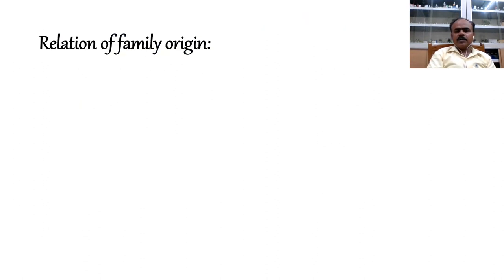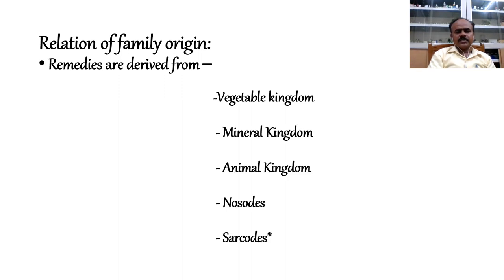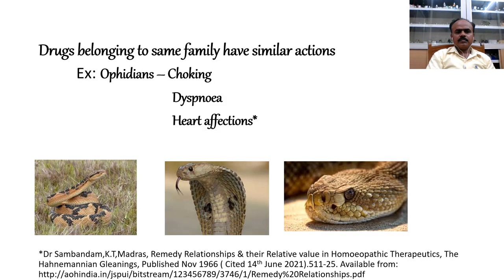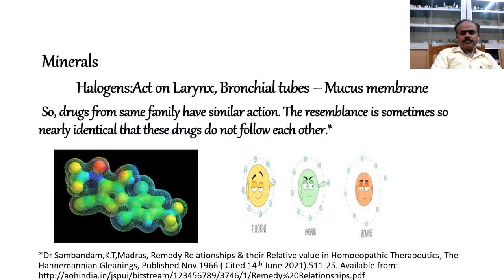The relation of common family origin: remedies in Materia Medica are derived from the vegetable kingdom, mineral kingdom, animal kingdom, nosodes, and sarcodes. Drugs belonging to the same family have similar actions, as we find in Ophidians where almost all snakes have choking, dyspnea, and heart affections. In the plant kingdom, the family Ranunculaceae shows acridity, and some drugs are narcotic in nature. In minerals, halogens act on the larynx, bronchial tubes, and mucous membranes in general. The resemblance is sometimes so nearly identical that these drugs do not follow each other.